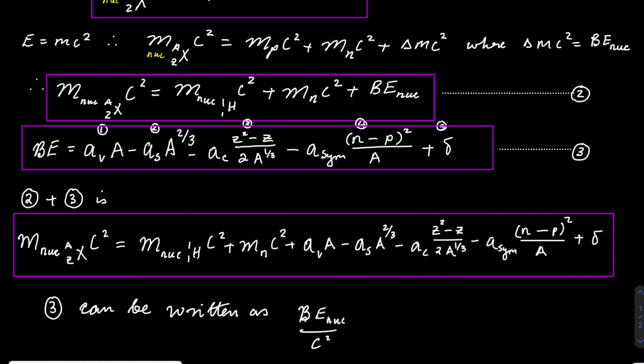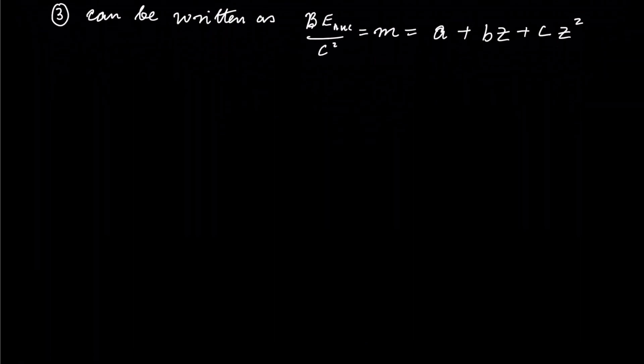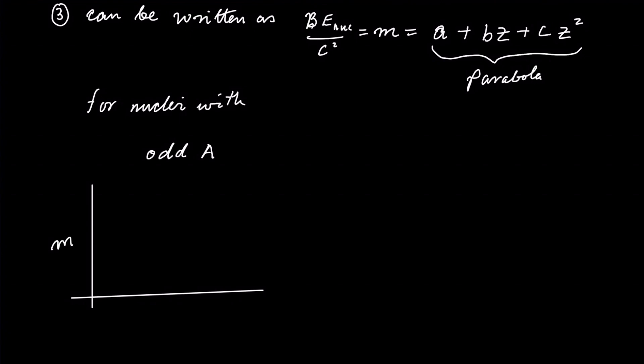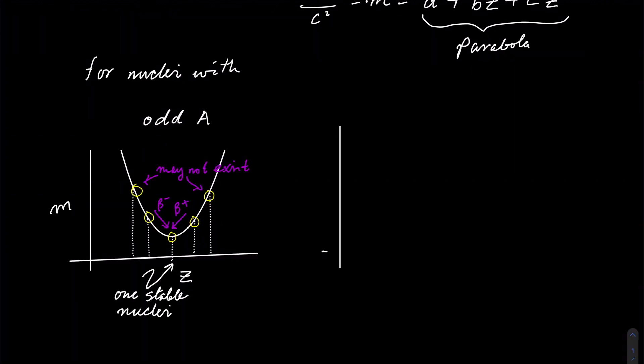The mass will be in a form A plus B times Z plus C times Z squared. This is a form of a parabola. If we plot the graph of mass as a function of the number of protons for nuclei with odd mass numbers, then you get a parabola like that, where unstable nuclei will undergo radioactive decay, and others may not even exist.